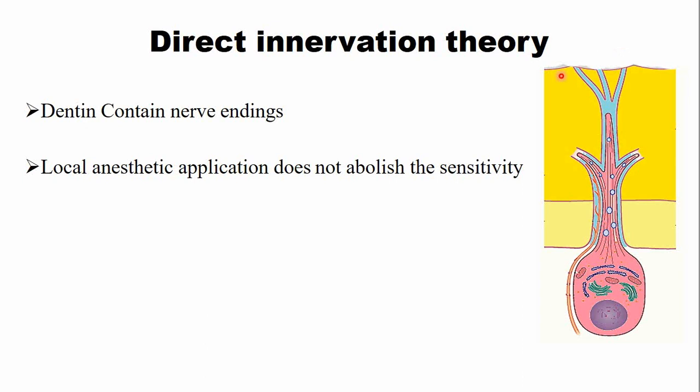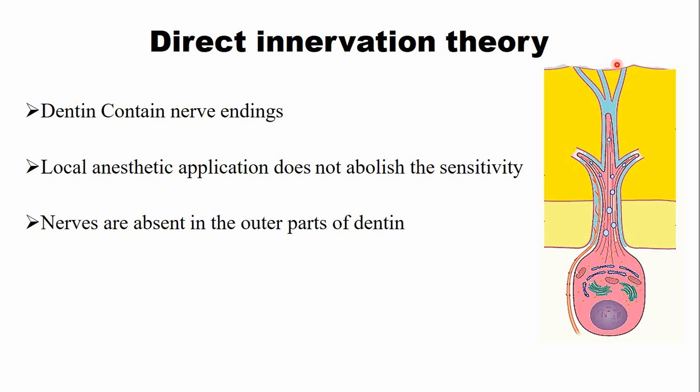Additionally, in specialized histological sections, it was observed that nerves are absent in the outer part of the dentine. In the few tubules where nerves are present, they are limited to the inner part near the pulpal surface. The nerves are not present close to the dentine-enamel junction.